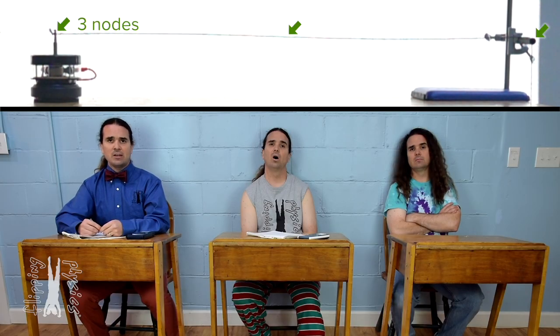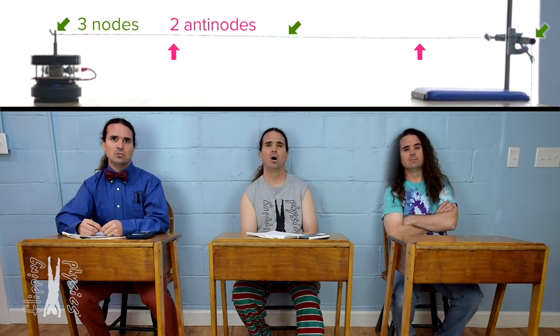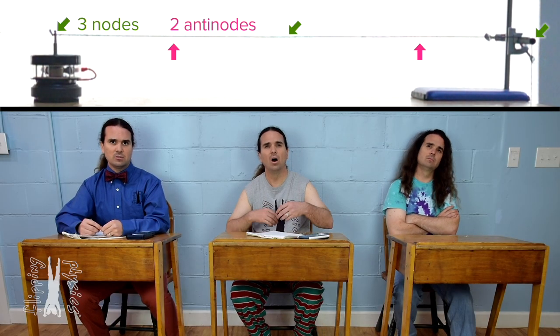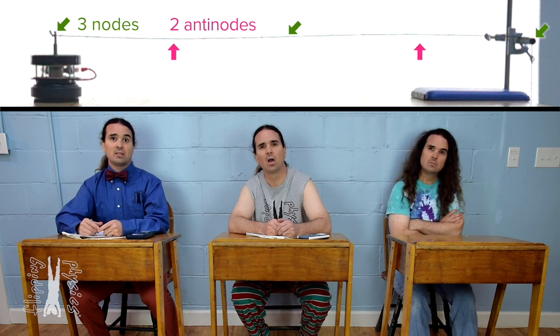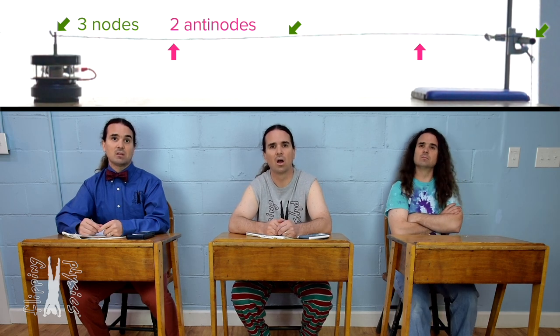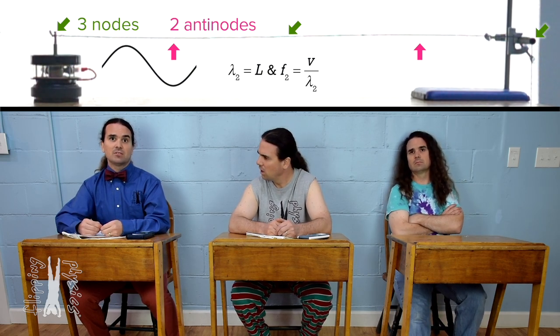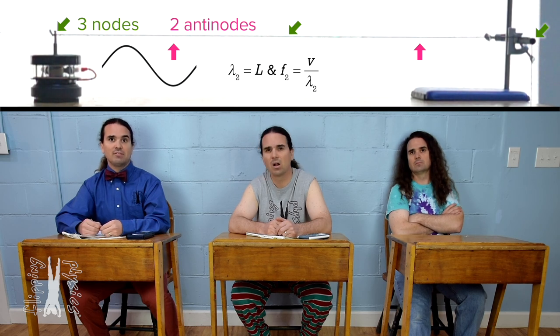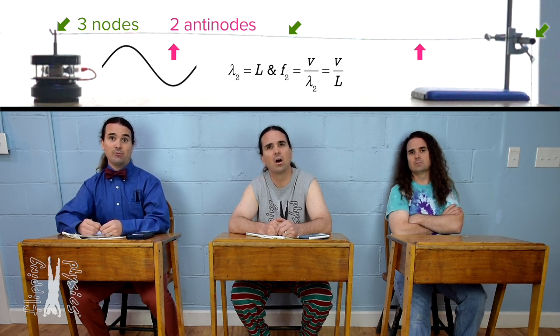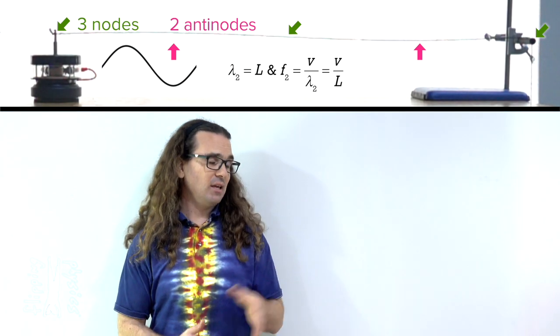The next possible standing wave pattern has how many nodes and antinodes? That would be three nodes and two antinodes. In that case, the wavelength of the wave equals the length of the string, and the frequency of the wave in the string equals the speed of the wave divided by the length of the string.